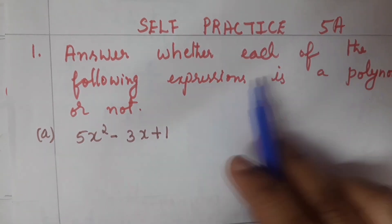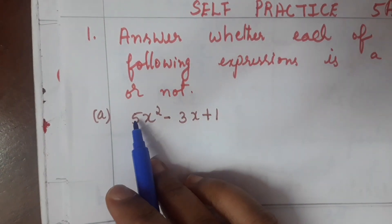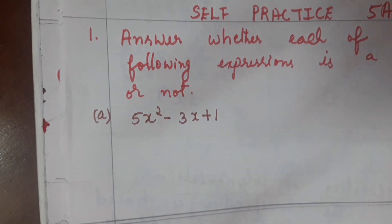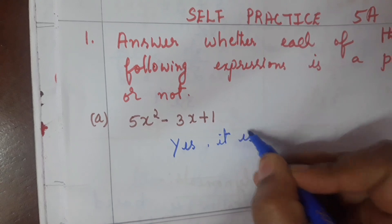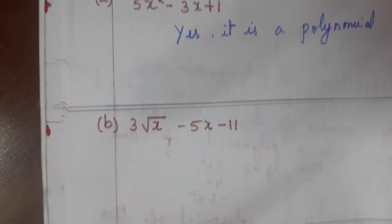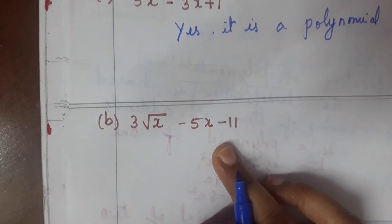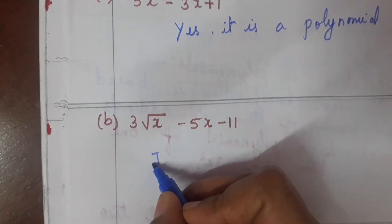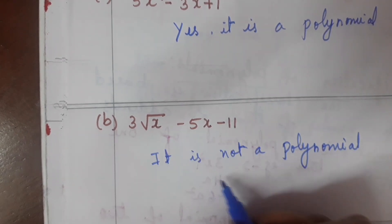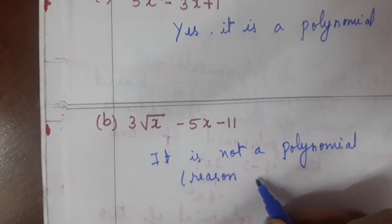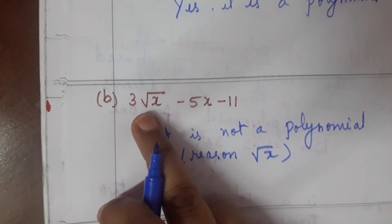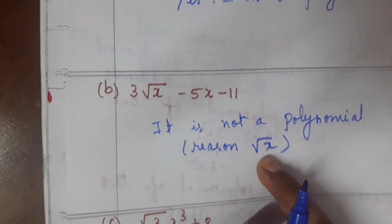First question: answer whether each of the following expressions is a polynomial or not. 5x squared minus 3x plus 1 — this is a polynomial. Yes, it is a polynomial because it is a trinomial. And 3 square root x minus 5x minus 11 — this is not a polynomial. The reason is square root x: inside the square root we should not write any letters, so the reason square root x means it is not a polynomial.